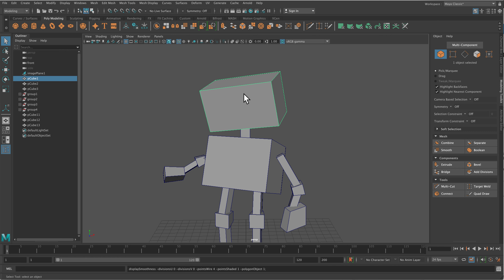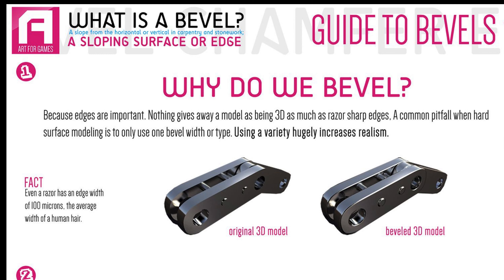Bevel is an option that creates nice soft edges, similar to the beveled edges on everyday products like your iPhone or your sunglasses — everything has a slight curve on the edge. One way to tell an object is 3D-rendered is if it has pinpoint sharp edges rather than beveled ones. A bevel is a sloping surface or curved edge. Objects have different size bevels depending on their function — the edge of a coffee cup may be highly curved versus the edge of your keys. Form is defined by function.